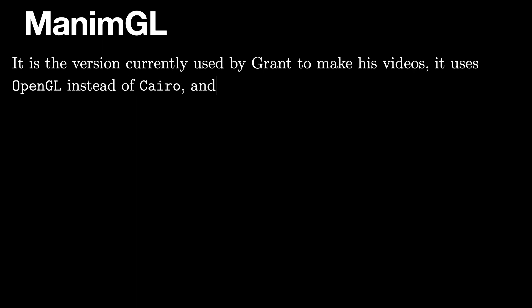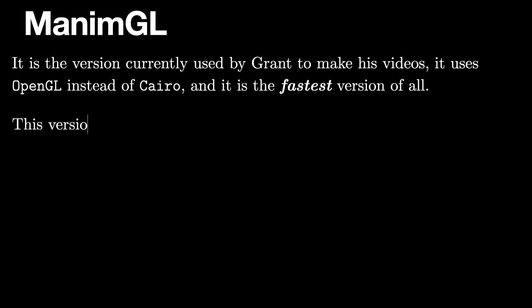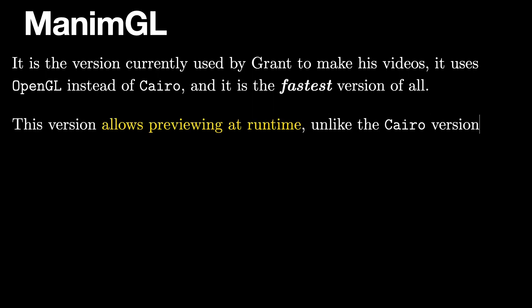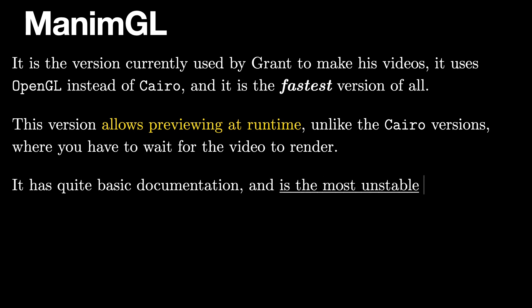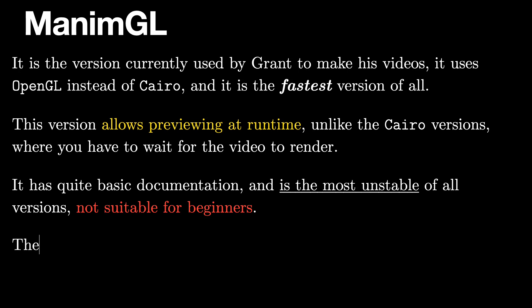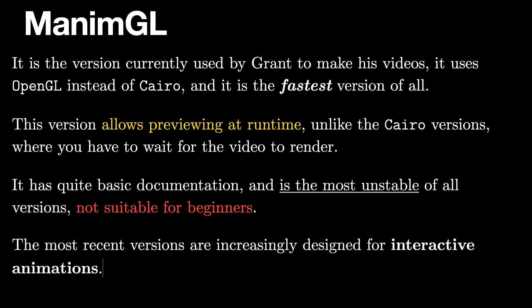Manim GL is the version currently used by Grant to make his videos. It uses OpenGL instead of Cairo and it is the fastest version of all. This version allows previewing at runtime, unlike the Cairo versions where you have to wait for the video to render. It has quite basic documentation and is the most unstable of all versions, not suitable for beginners. The most recent versions are increasingly designed for interactive animations.